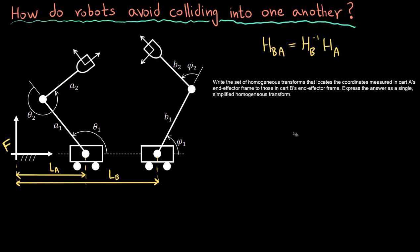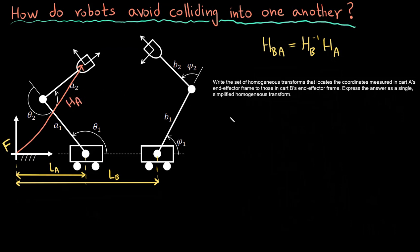The question asks to express coordinates in robot A's end effector frame with respect to robot B's end effector frame — that is, to find H_BA. It also asks for a single simplified homogeneous transform. I know my first homogeneous transform H_A equals H1 times H2 times H3, where H1 takes the fixed frame to the first joint, H2 takes it to the next, and H3 to the end effector.